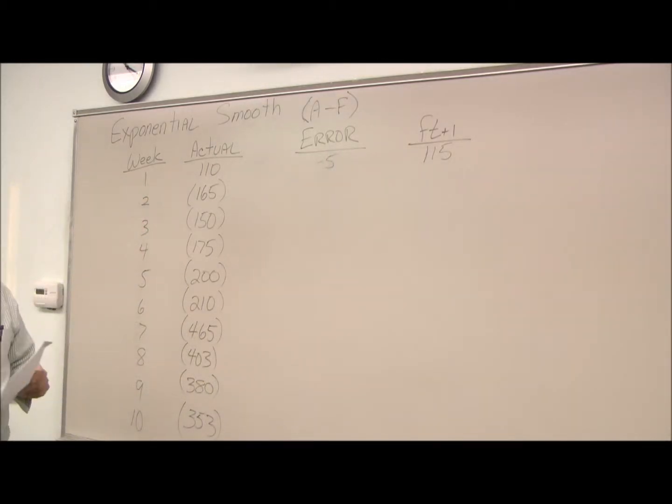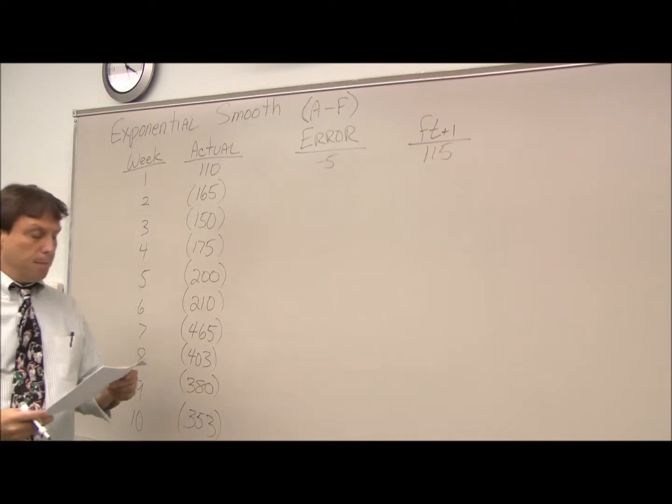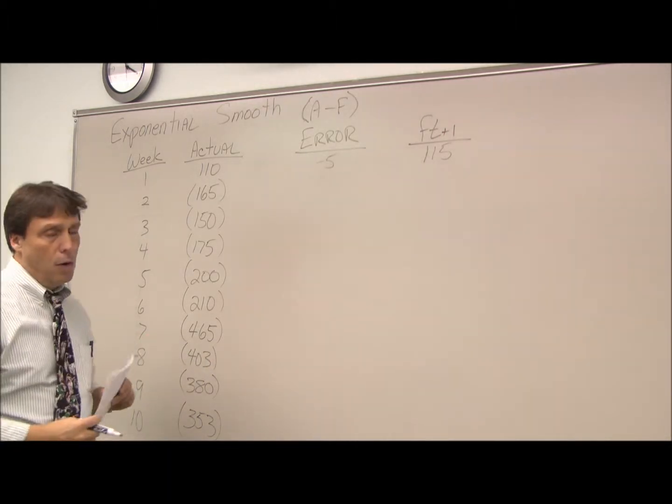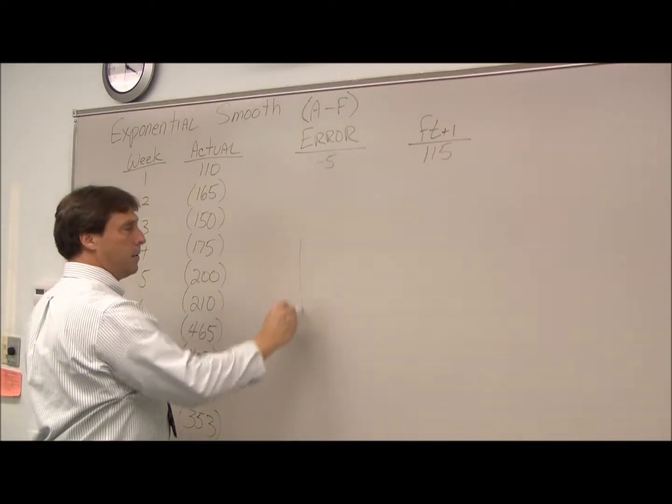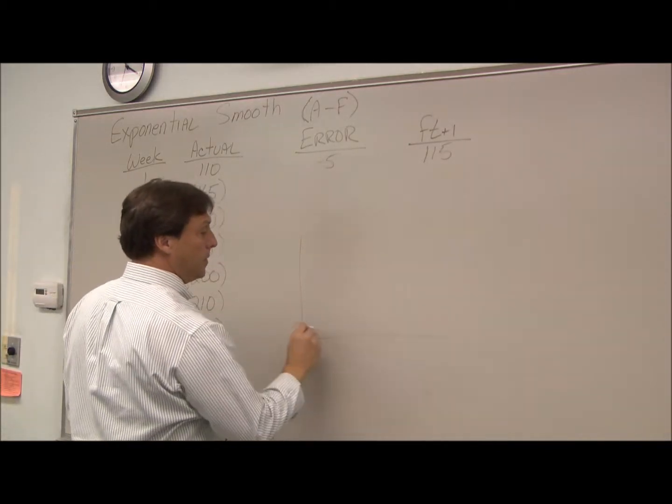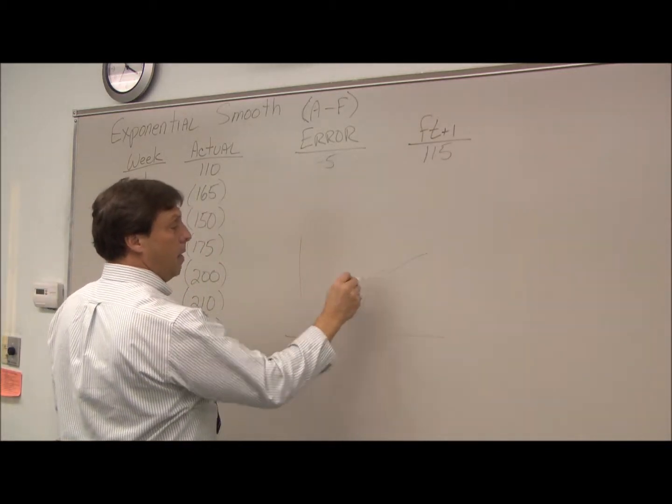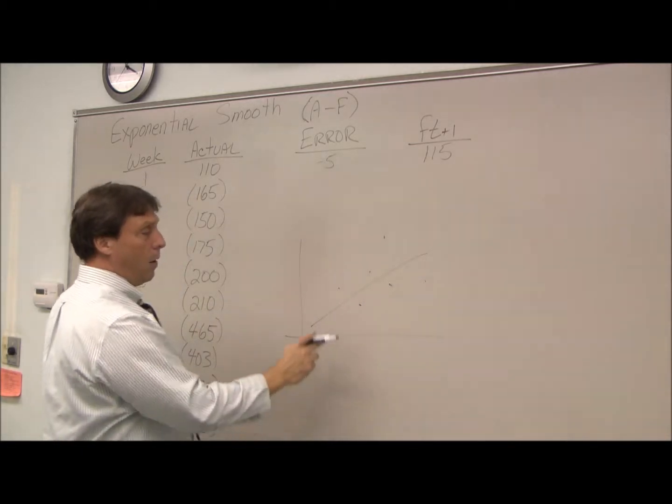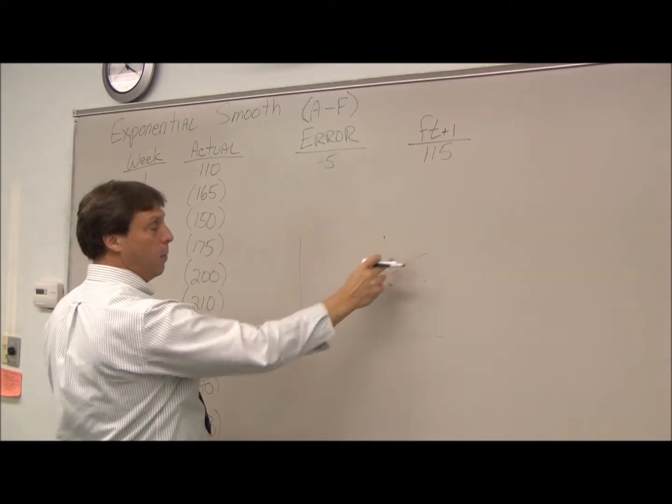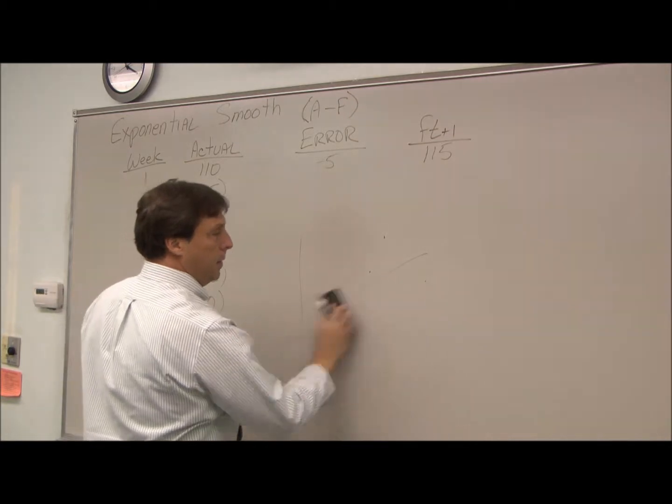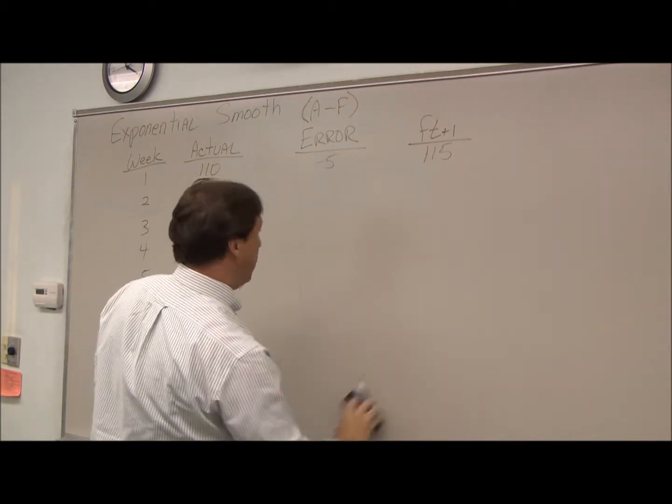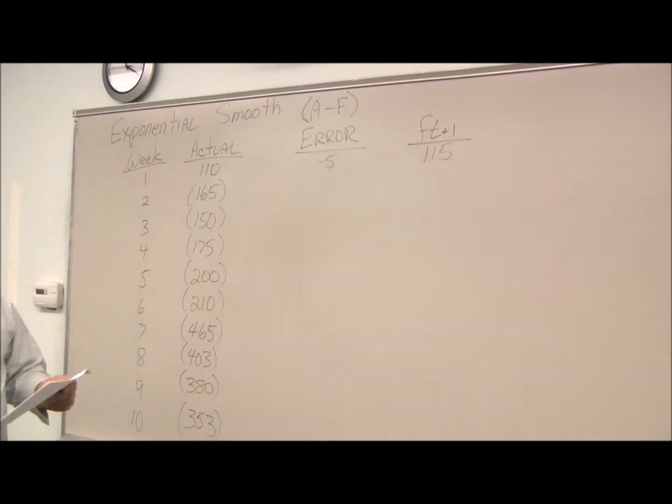And these are thousands, so negative 5,000. That's how much my forecast was off. All the error is telling us is how much our actual points deviated from where it really came in. It's another way of looking at the variance. All right, so now I want to calculate my forecast.